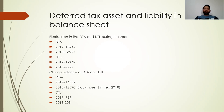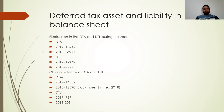The fluctuations in DTA and DTL during 2018 and 2019 were respectively 2,630 and 883 in 2018, and in 2019 the DTA figure is 3,942 and the DTL figure is 2,469. The closing balances of DTA and DTL for 2019 are 16,532 and for 2018 are 12,590 for Blackmore Limited. The DTL closing balance is 739 in 2019 and 203 in 2018.